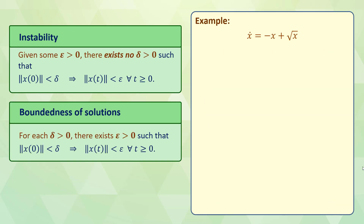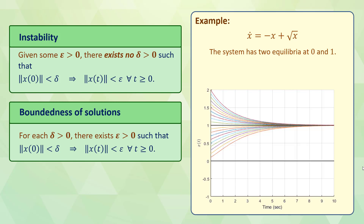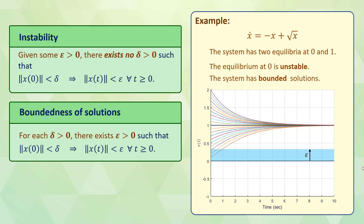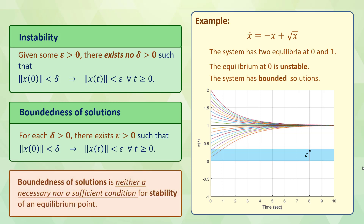In the second example, we consider another nonlinear system: x_dot = -x + √x. This system also has two equilibrium points at 0 and 1. Similarly to the previous example, we use MATLAB and plot solutions starting from 0 to 2. We see that the origin is unstable because for the epsilon chosen, there exists no positive delta such that solutions stay in the epsilon neighborhood. However, all solutions are bounded and the boundedness condition holds for any given positive delta. So the origin is unstable, but the solutions are all bounded. These two examples confirm that boundedness of solutions is neither a necessary nor a sufficient condition for stability of an equilibrium point.